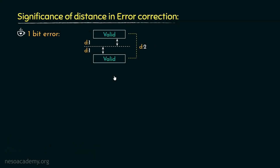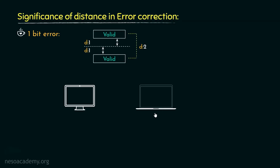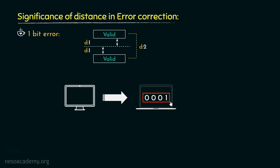Now how so? Let me illustrate. Say during the digital communication between two machines, the receiver receives this pattern 0 0 0 1. Suppose this is an invalid pattern. Now if you remember, during the previous session, we learned that even before the communication takes place, both the sender and the receiver must be able to recognize the valid and the invalid codes. Say the receiver detects that this is an invalid code, nonetheless, it can't really determine the valid pattern because in case of a 1-bit error code, for every invalid pattern, there are two valid patterns of equal distance from it.